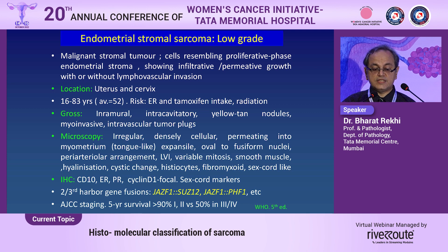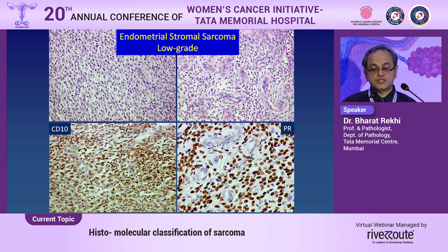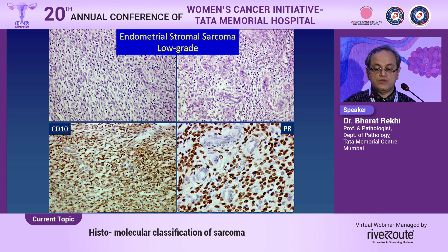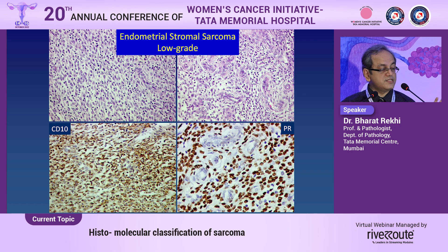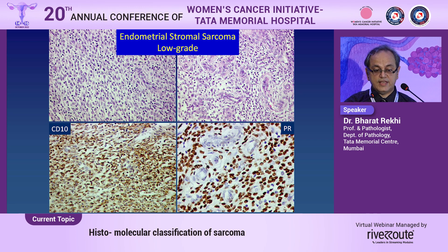These tumors are staged according to the AJCC. The five-year survival is about 90% for Stage 1 and 2, in contrast to about 50% for Stage 3 and 4. Morphologically, you see a very cellular tumor composed of cells resembling stroma — oval to short spindle cells — with a very characteristic perivascular arrangement. Immunohistochemically, diffuse CD10 expression and consistent progesterone receptor expression are seen in most cases.